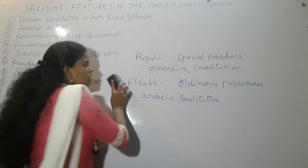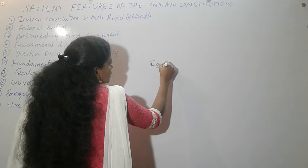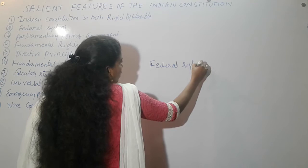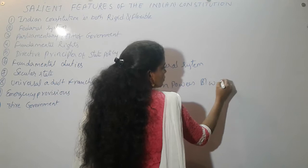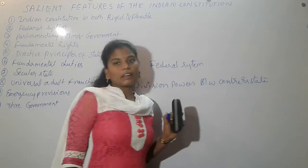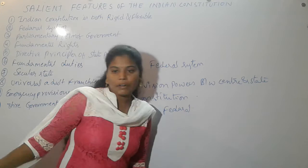The second feature is the federal system. India has a federal system with a division of powers between the center and the states. Though India is a federal country, it also has unitary features.